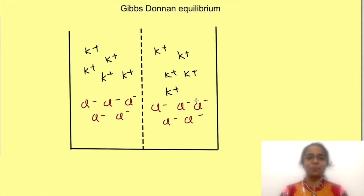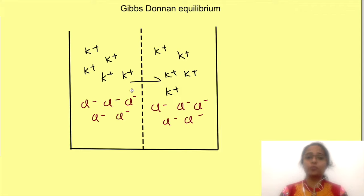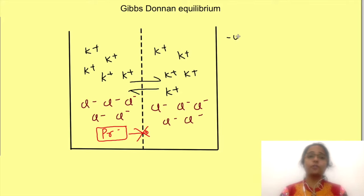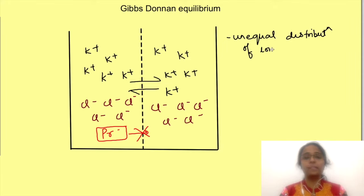Hello and welcome to Physiology Open. In this video we will talk about the concept of Gibbs-Donnan Equilibrium. Gibbs-Donnan Equilibrium explains how charged particles distribute themselves across a semi-permeable membrane in the presence of another charged particle to which the membrane is not permeable. By understanding Gibbs-Donnan Equilibrium we get to know why concentration of ions is different inside the cells as opposed to its outside environment, i.e. interstitial fluid, and why this leads to generation of a potential across the membrane.